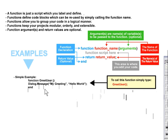So if you look on the right side of the screen here in the yellow box, you'll see that the code used to call this function in red is simply greetUser with a set of brackets and a semicolon. And that would cause that function to activate and a dialog message box to come up.